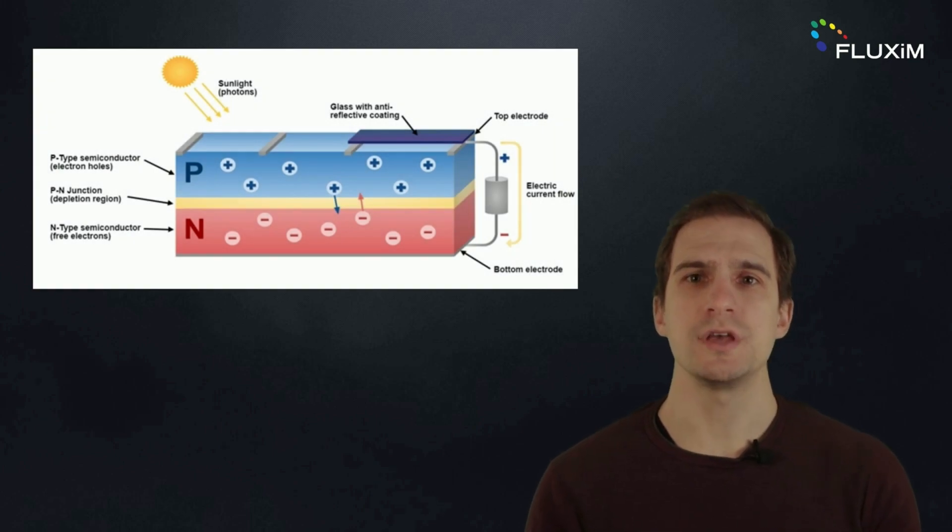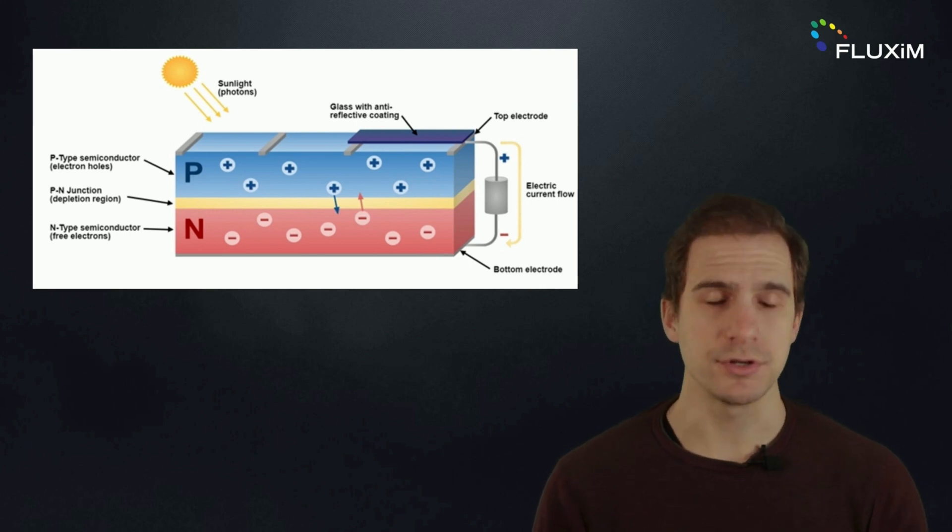Conventional solar cells have a single p-n junction, which is a combination of p- and n-doped light-absorbing semiconductor layers. The opposite type of doping creates an internal electric field that promotes the extraction of photo-generated charges.